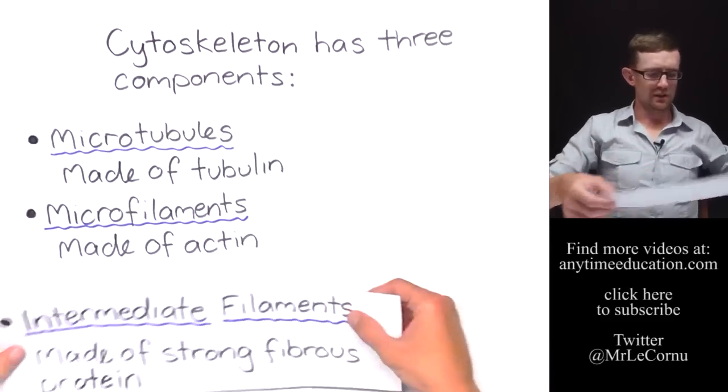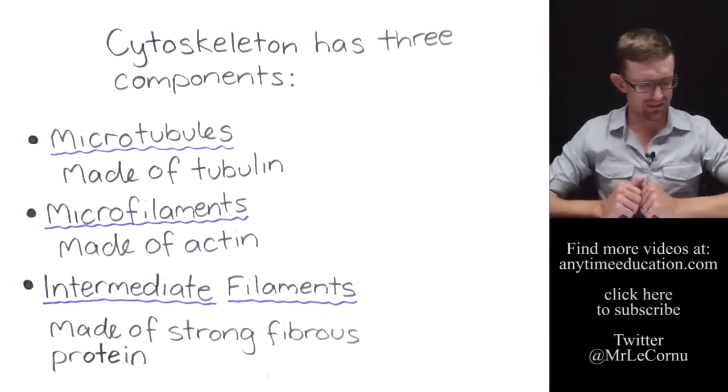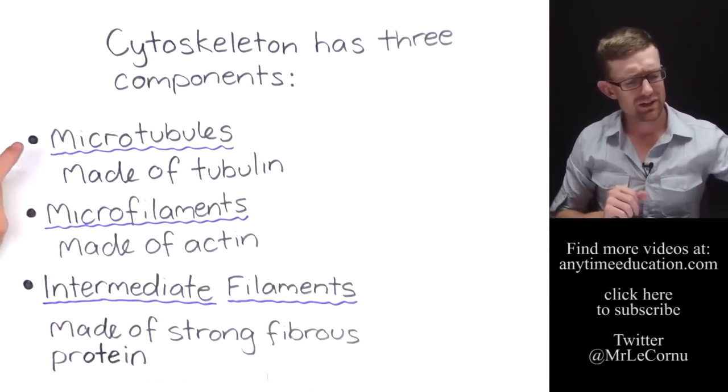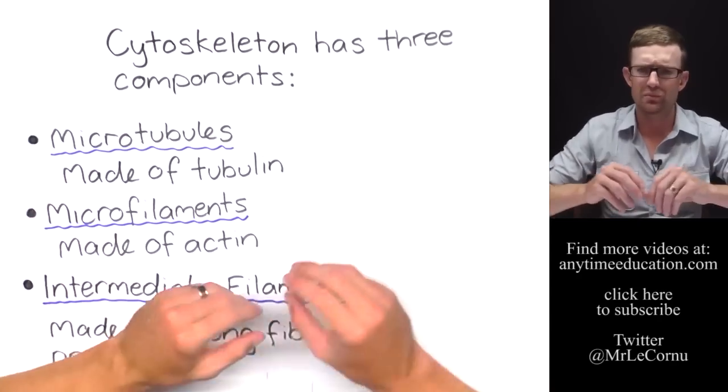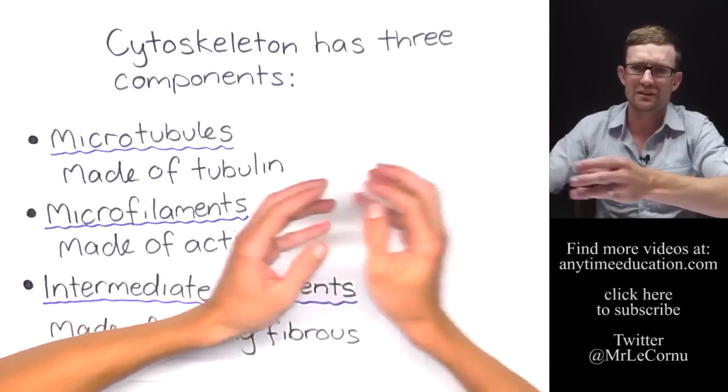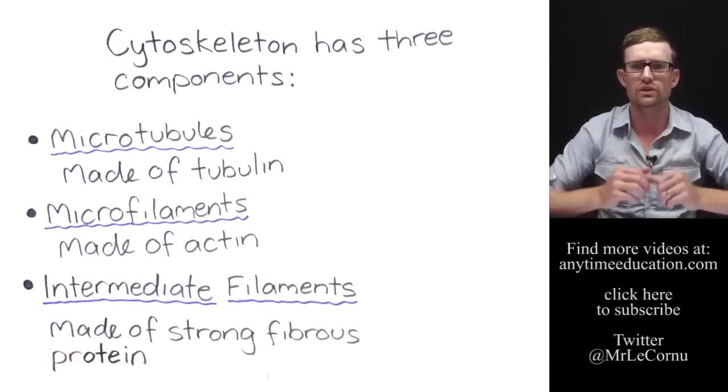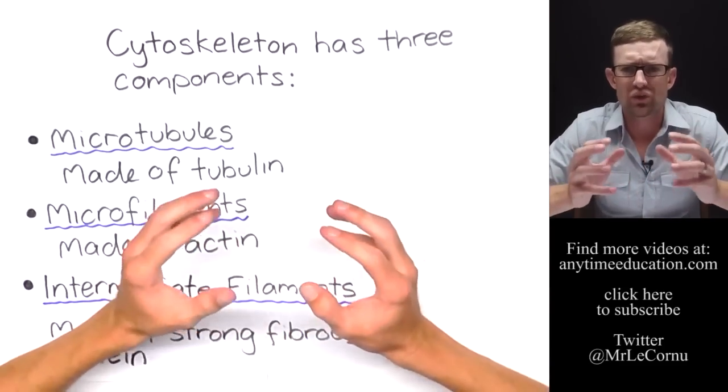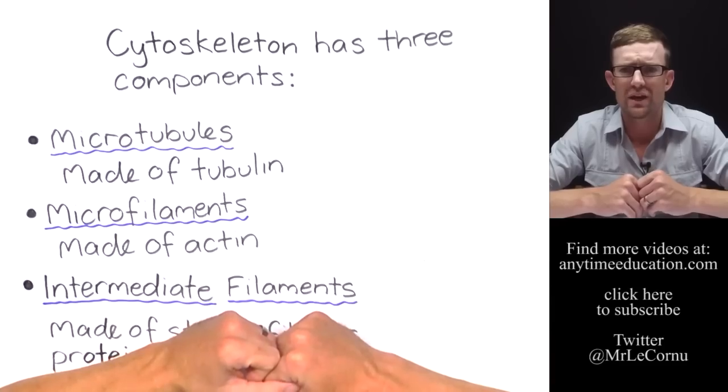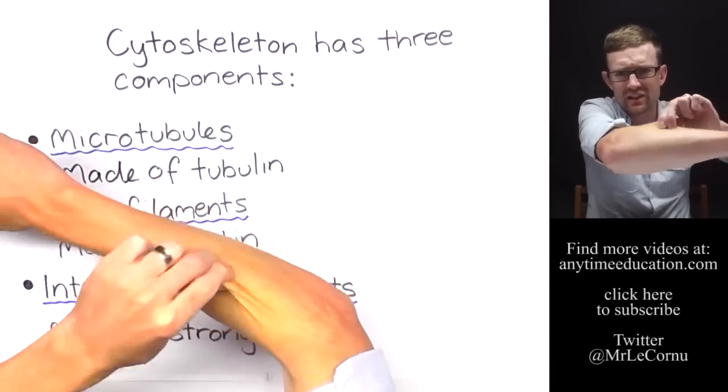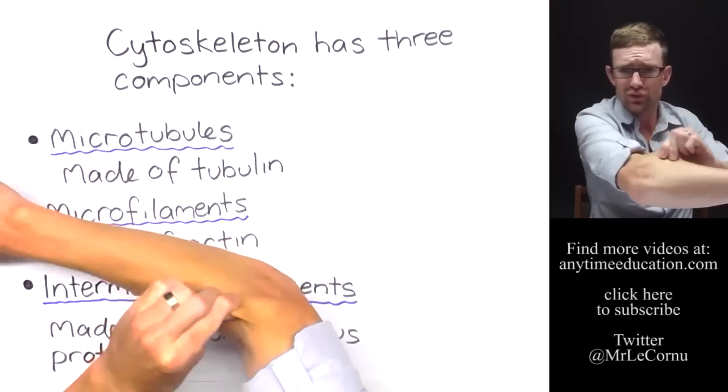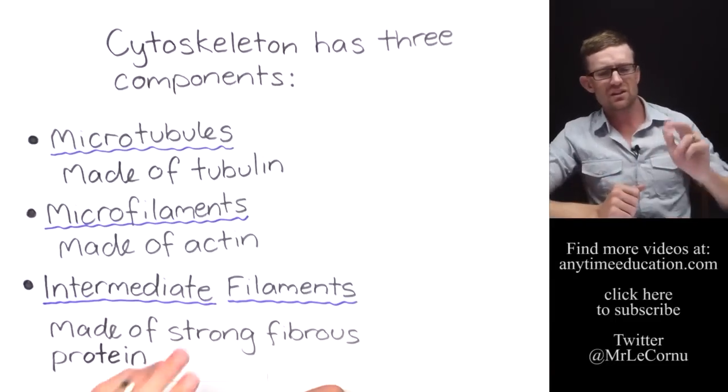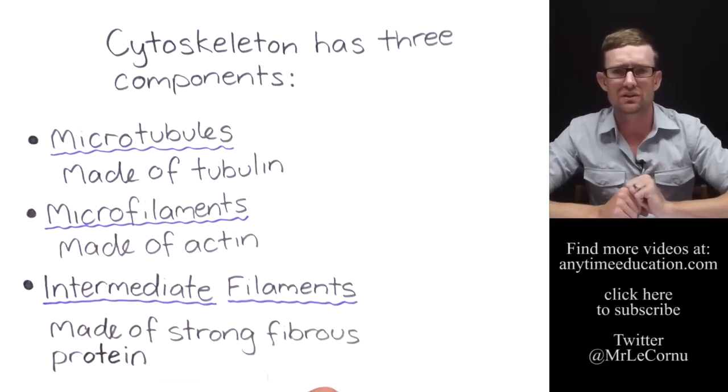The last component is called intermediate filaments. Intermediate filaments are made of strong fibrous protein. So they're not like microtubules and microfilaments where they rapidly add subunits and take subunits away to grow and shorten. But what intermediate filaments are responsible for is strengthening cells that are subject to lots of wear and tear. A good example of that is skin cells. Skin cells go through all sorts of wear and tear, but they're really strong. And that's thanks to the work of intermediate filaments. So they're your three major components of the cytoskeleton.